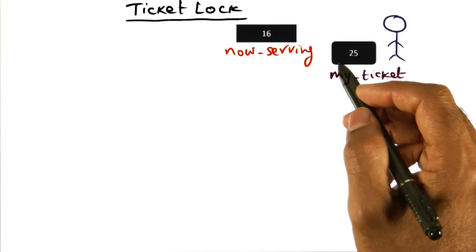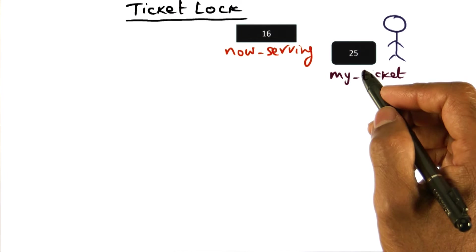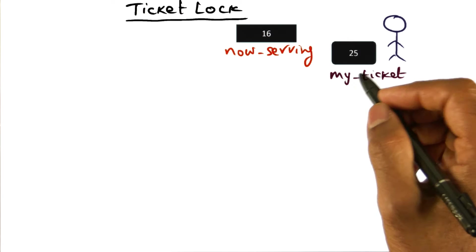Now, deli shops and restaurants, busy ones that is, often use a ticketing system to ensure fairness for those who are waiting to get served.